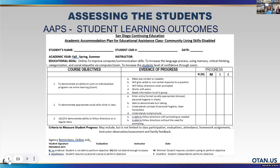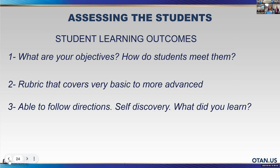For assessing students, you really need to look at what your objectives are and then clearly define how students meet them so you can decide. Building a rubric that covers very basic to more advanced is good. My students are all at different levels, so it's a really individual sort of thing. Most of our students are really focused on: are they able to follow directions the teachers give, and self-discovery — what did you learn? I will either orally or in writing ask students what they learned in class, keeping record of that so we know what they think they're learning and can align that with what the teacher thinks they're learning.